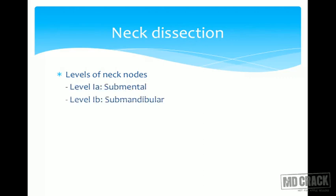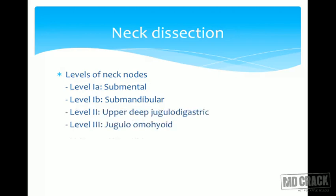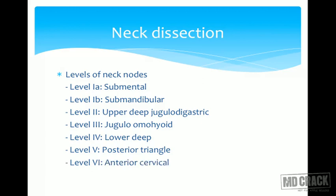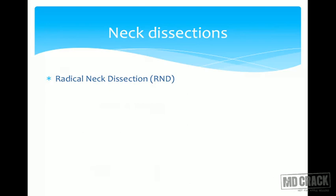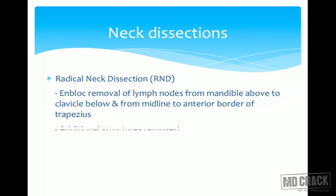Next is neck dissection. There are various levels of neck nodes: Level 1a is submental, Level 1b is submandibular. Levels 2, 3, and 4 are the upper deep jugular, jugulo-omohyoid, and lower deep jugular nodes respectively. Level 5 is the posterior triangle nodes, Level 6 is the anterior cervical nodes, and Level 7 is the mediastinal nodes.